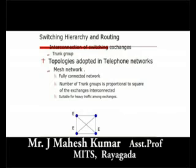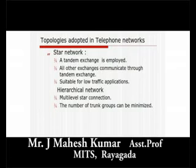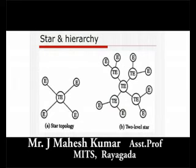MESH connections are used only when there is heavy traffic among exchanges, as happens in metropolitan areas. In a STAR network, a tandem exchange is employed and all other exchanges communicate through it, suitable for low traffic applications. In hierarchical networks, multi-level star connections are available and the number of trunk groups can be minimized. A star connection utilizes an intermediate exchange called a tandem exchange through which all other exchanges communicate, and star networks are used when traffic levels are comparatively low.